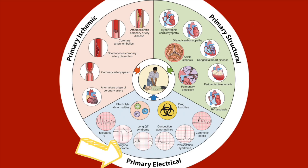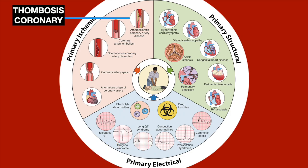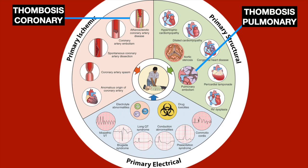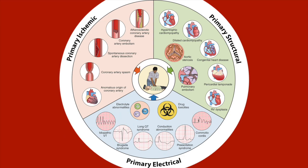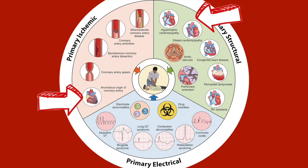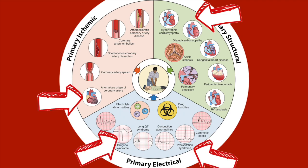Let's see where the H's and T's fit into this model. Thrombosis coronary fits as primary ischemic, and thrombosis pulmonary as primary structural. Tamponade goes into structural as well. Toxins go into primary electrical. Hyper- or hypokalemia and other metabolic causes go into primary electrical. But some causes are not included in the H's and T's — like structural causes such as cardiomyopathies, congenital issues like anomalous coronary arteries, and inherited electrical disorders like Brugada and Wolf-Parkinson-White. We even have blunt myocardial injury in the form of commotio cordis, which we'll come back to.